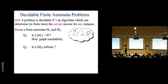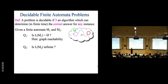Algorithm two: given a finite automaton, determine whether its language is infinite or finite. Before that, why doesn't the naive algorithm work — run the machine on every string in Σ* and report based on acceptance? Because Σ* is infinite: you'll never finish iterating, and an algorithm must terminate and give an answer.